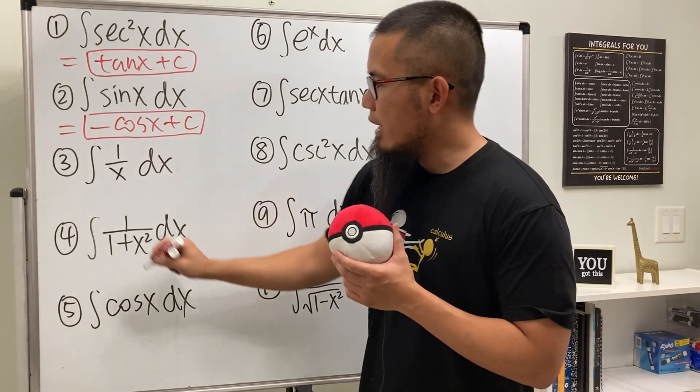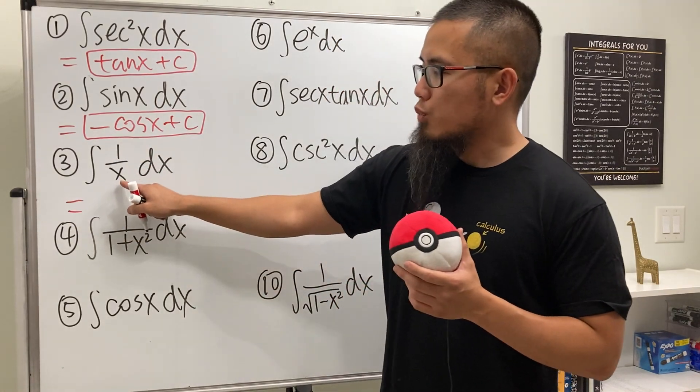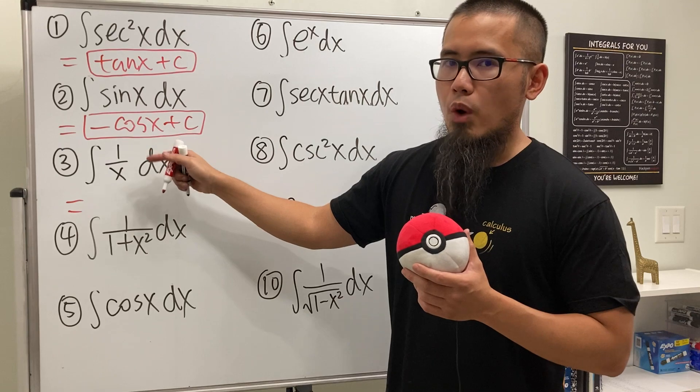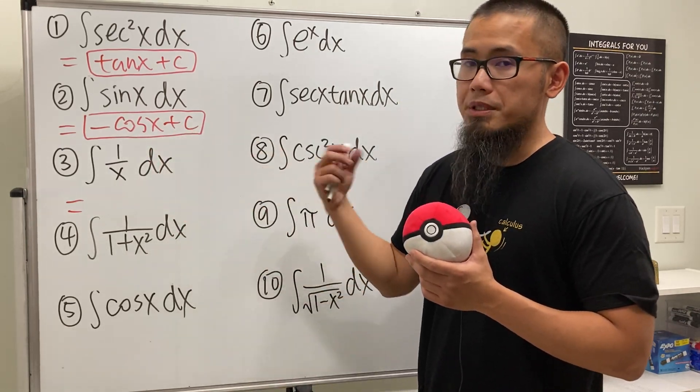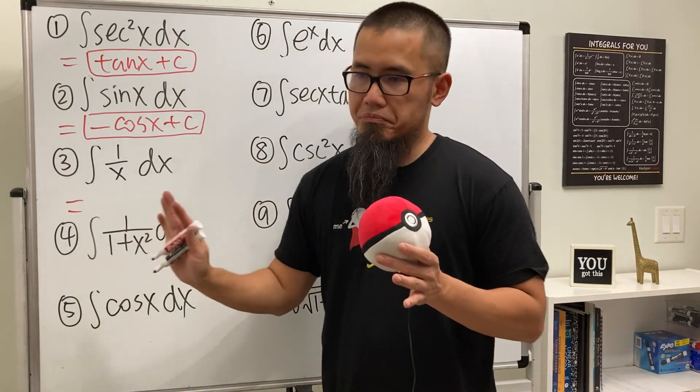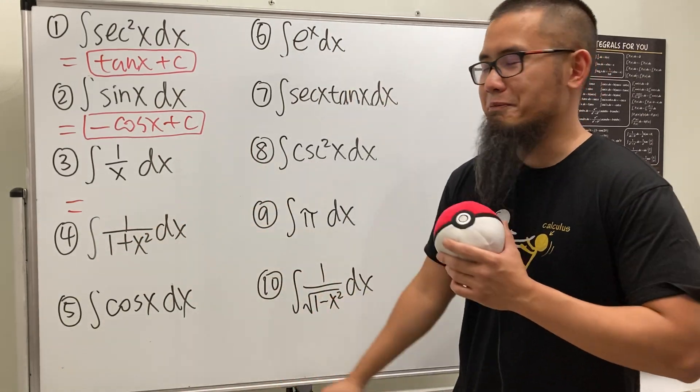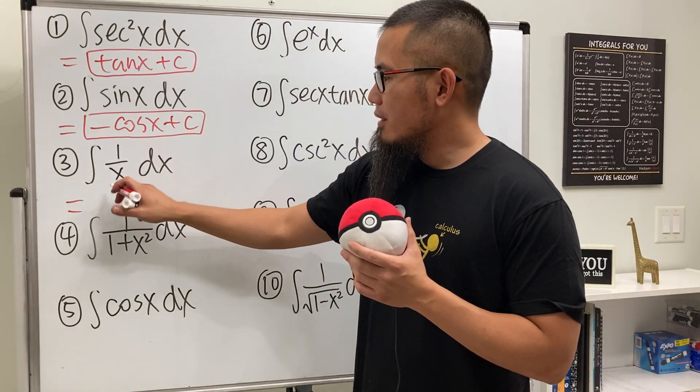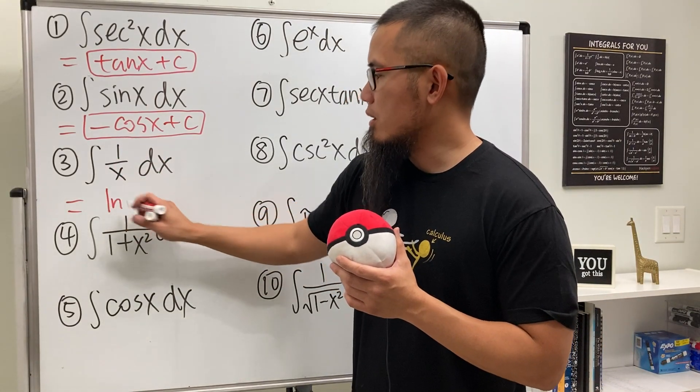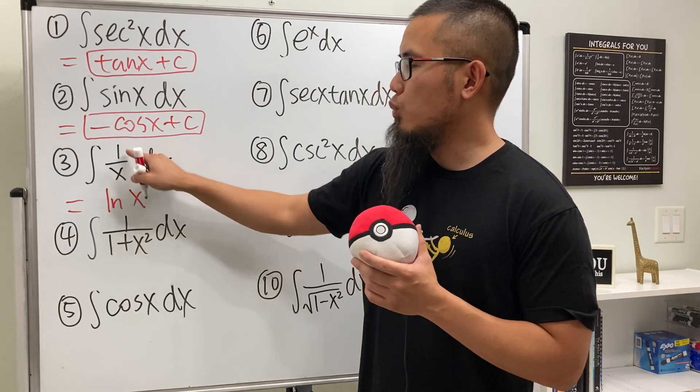Next, integral of 1 over x. Do not write this down as x to the negative 1 and use the reverse power rule, because negative 1 plus 1 will be 0 divided by 0. Well, I don't know what will happen, right? We just have to remember the derivative of natural log of x will give us 1 over x.